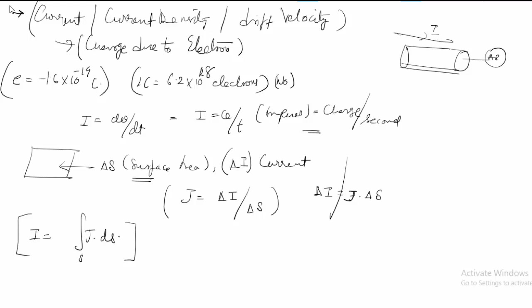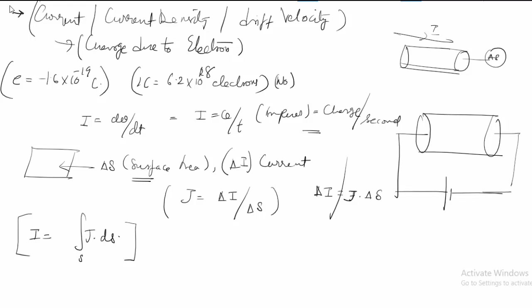Now to find the current density in terms of drift velocity — consider a conductor connected to a DC source. The positive terminal and negative terminal create an electric field inside the conductor in a specific direction. The electrons inside the conductor will move in the direction opposite to the electric field.